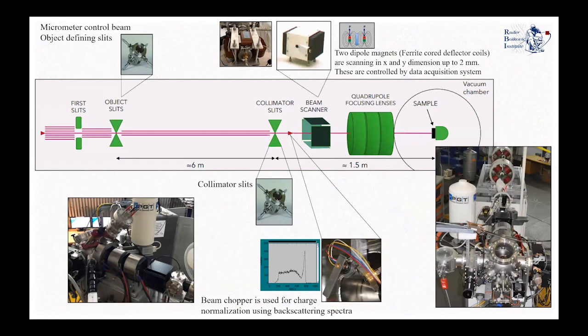Starting from left to right in this figure: the beam comes from our accelerator and first meets the object slits. These slits need to have micrometer precision in order to control the rate of the beam as well as fix the beam spot and be able to focus it further. These slits can be opened to hundreds of micrometers or even less in order to achieve good resolution. Following the object slits, the beam is further collimated using collimating slits, and then meets a beam chopper in our setup.